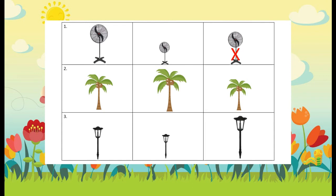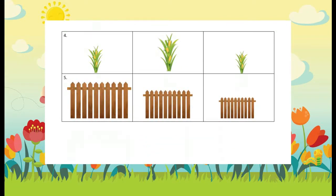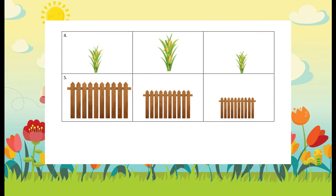The third one — we have a garden lamp. Cover the tallest one and compare the others. That's right, that's also on the first row, so cross it out. Number four, we have a corn plant. Which one is the taller? Excellent, that's also the first row. Number five, you're going to see a fence. Cover the tallest and let's see which of these two objects is the taller. Excellent — that one is in the middle, so cross it out.